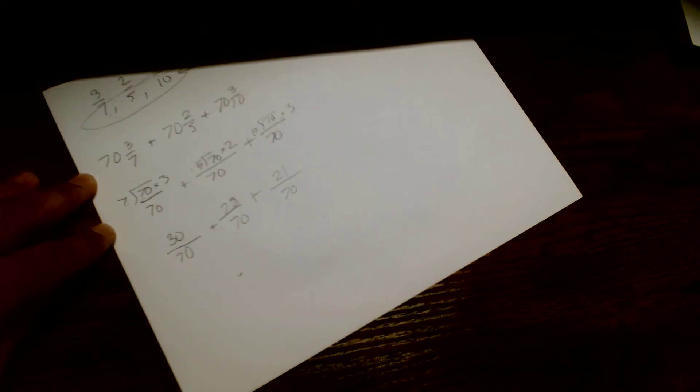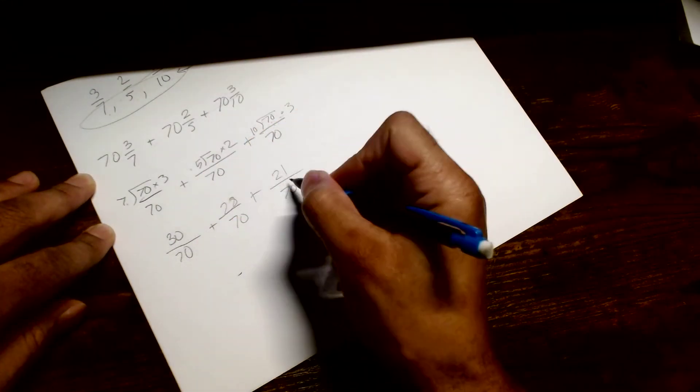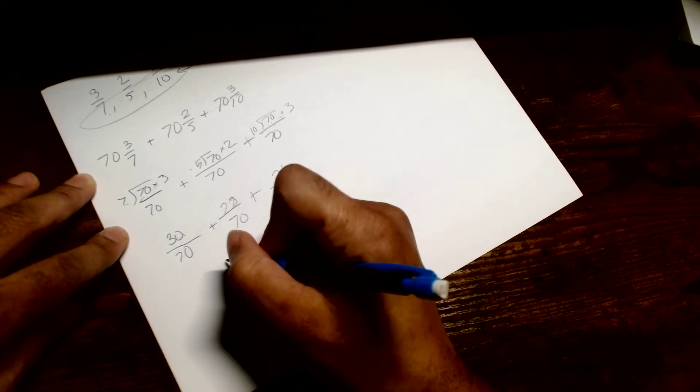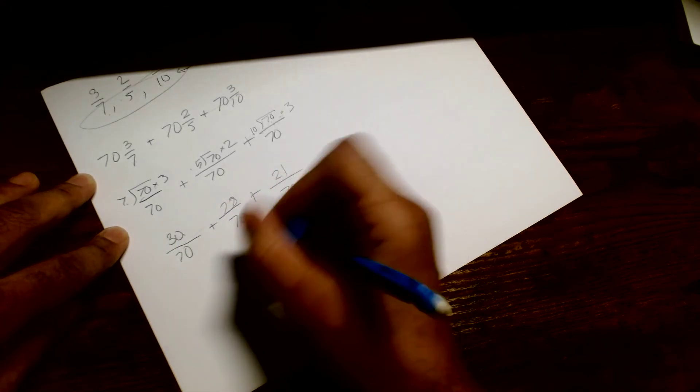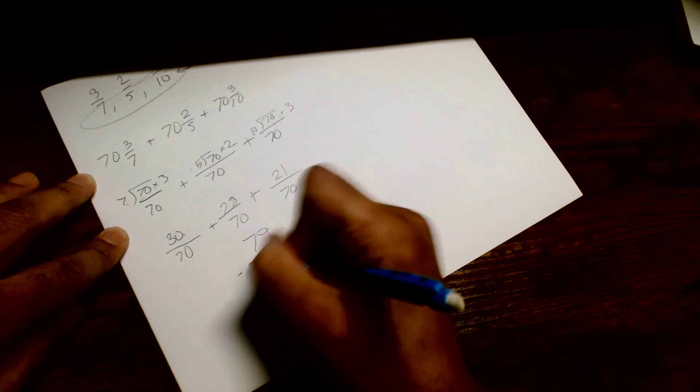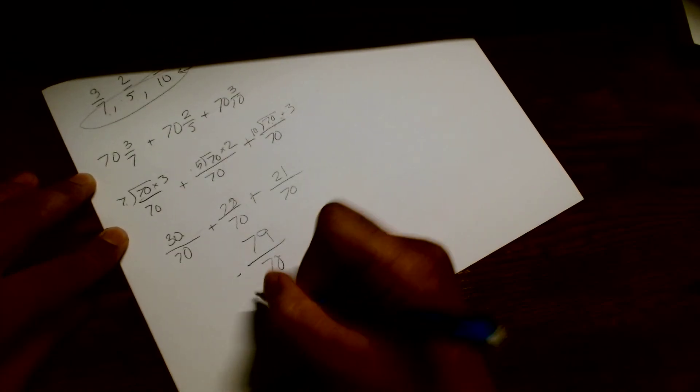You got that right there. Check my math, this might be wrong. So now add all this together: 21, 28 and 30. Put that 9 right there. 79 over 70. Now we got to divide that by how many numbers we got. 1, 2, 3. Divide by 3.